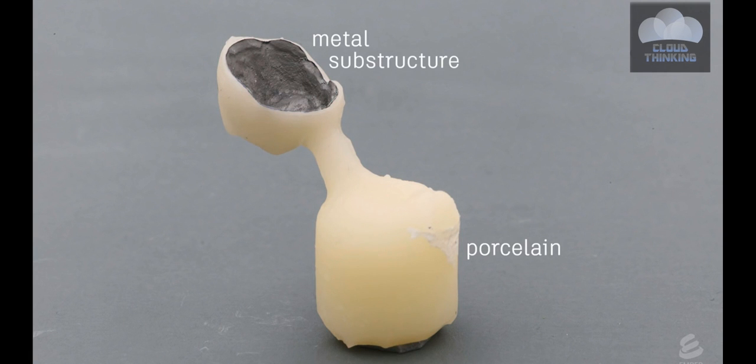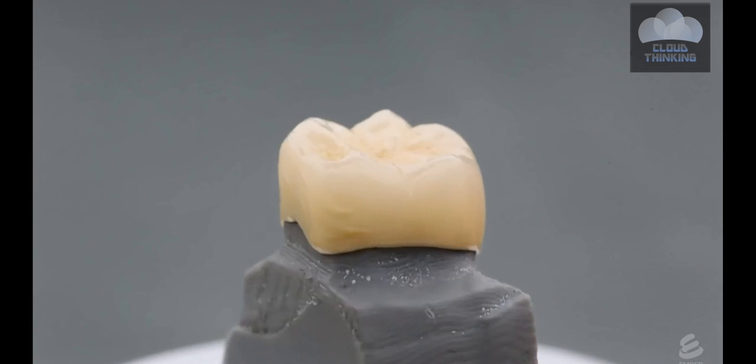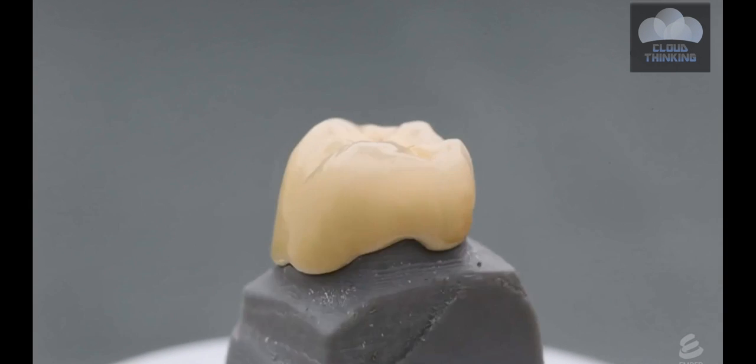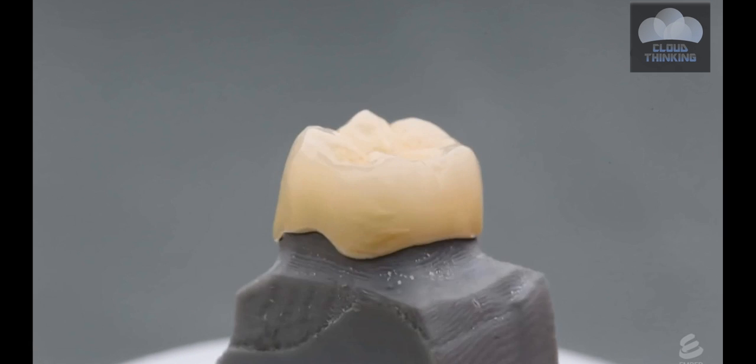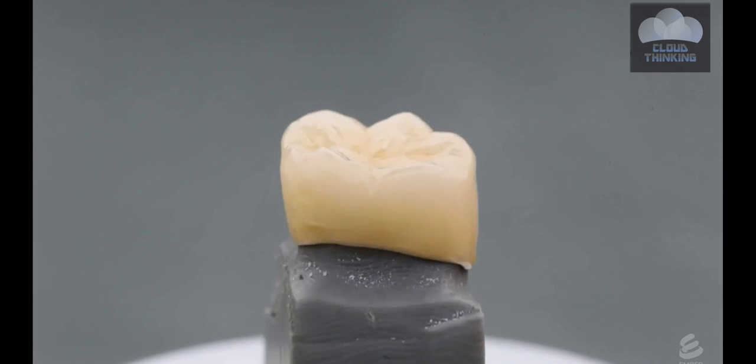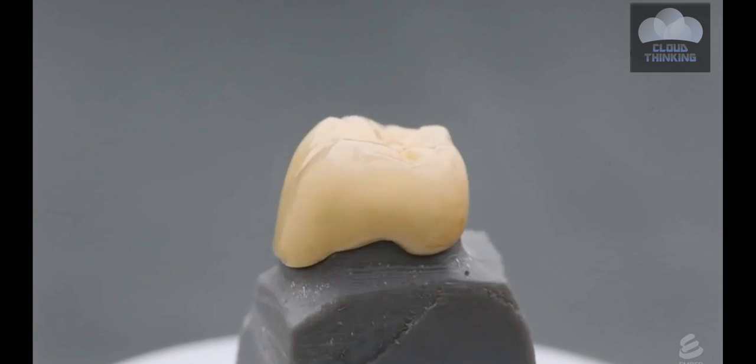They remove the sprue and the crown goes through some finishing steps, including detailed painting and glazing, which gives the crown a natural tooth-like appearance. It is now ready to be shipped back to the dentist, who will place it in the patient.